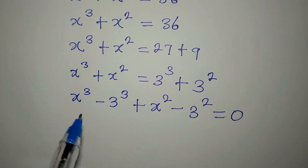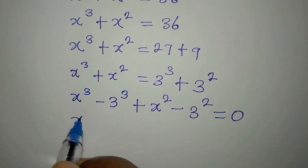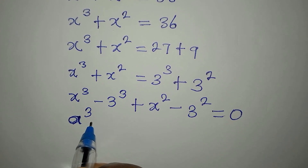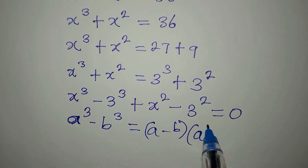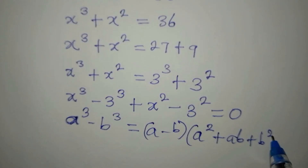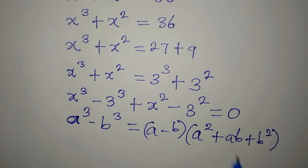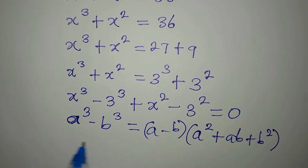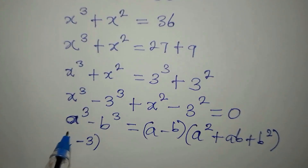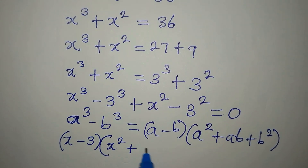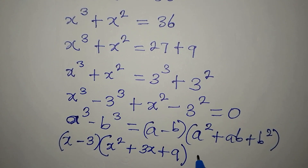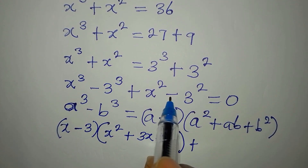Here we have a difference of cubes. Remember: a³ minus b³ equals (a minus b)(a² plus ab plus b²). Applying this: (x minus 3)(x squared plus x times 3 plus 3 squared), which gives us (x minus 3)(x² plus 3x plus 9).